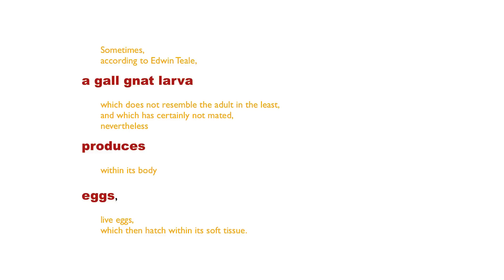Here we have in red the base clause or the main idea of the sentence: a gall gnat larva produces eggs. As an aside, Annie Dillard is talking about in this essay certain bugs where the female of the species will give birth to eggs, and then those eggs will hatch and the babies will eat the mother. So that's why she's talking about gall gnat larvas here. But the base clause or the main idea is: a gall gnat larva produces eggs.